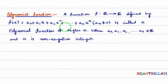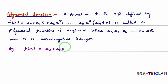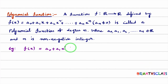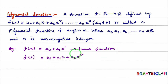Now I will explain what a polynomial function is with examples. This function is of the form a0 + a1·x, so it is a polynomial function of degree 1. Moreover, this is also known as a linear function. The next function is of the form a0 + a1·x + a2·x². It is a polynomial function of degree 2, also known as a quadratic function.